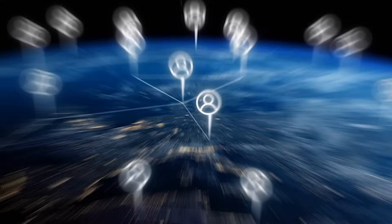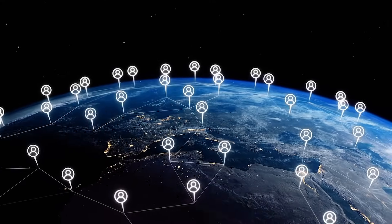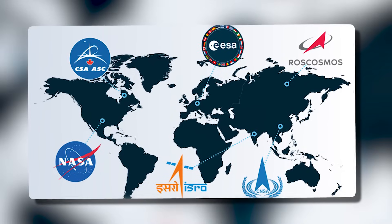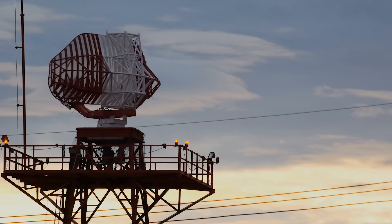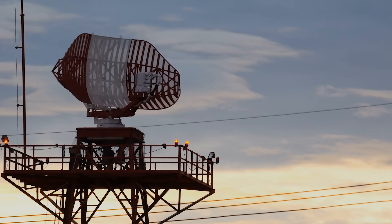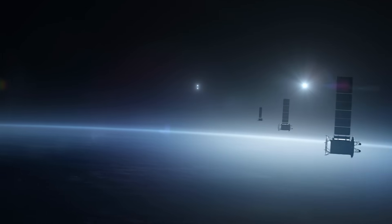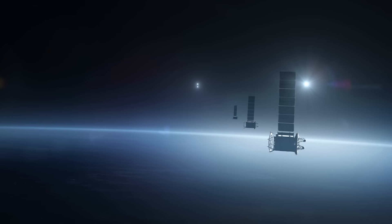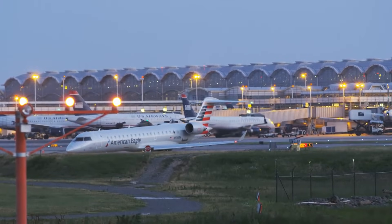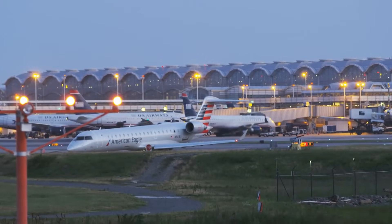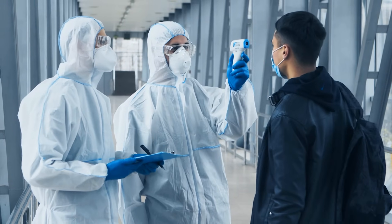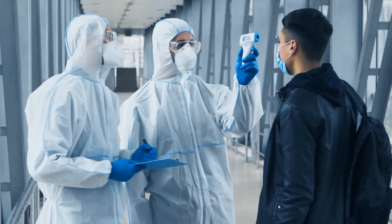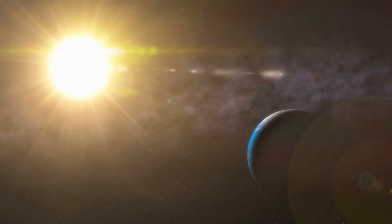The global community is already mobilizing. Observatories, space agencies, and defense networks have entered a heightened state of alert. Emergency protocols for satellite protection are being deployed. Some low-orbit satellites are being temporarily powered down or repositioned to minimize damage. Airlines are considering rerouting polar flights to lower radiation exposure at high altitudes. Public health officials are assessing potential radiation risks for high-latitude populations and preparing contingency plans for possible increases in UV exposure.